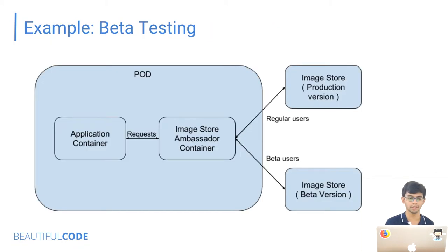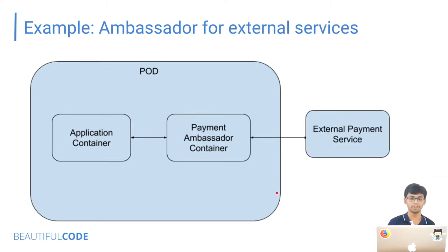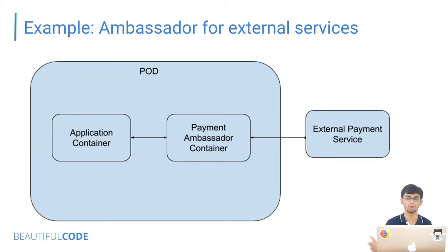A few other examples where ambassador pattern can be used: beta testing — your image store ambassador container can have logic to figure out whether incoming requests are from beta users or regular users. If regular users, direct the request to your production version; if beta users, redirect to the beta version. Another example is for an external service like a payment service — say you're using Stripe. You can have an ambassador container with circuit breaking logic: after making a certain number of requests with no response, it stops making requests and returns a failure, or implements a retry mechanism after a set delay.